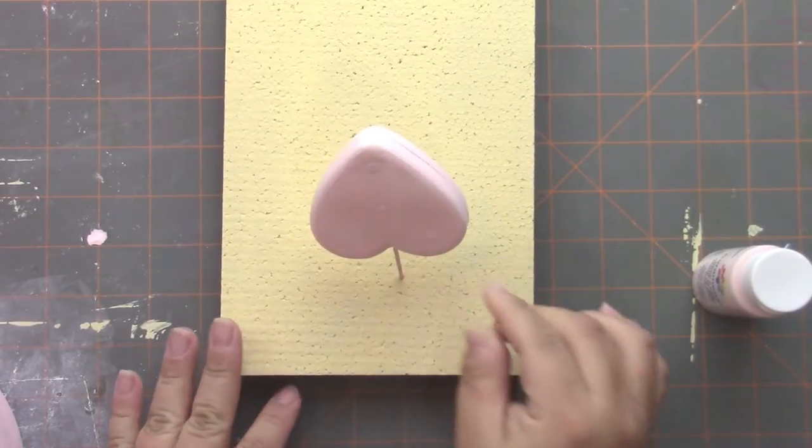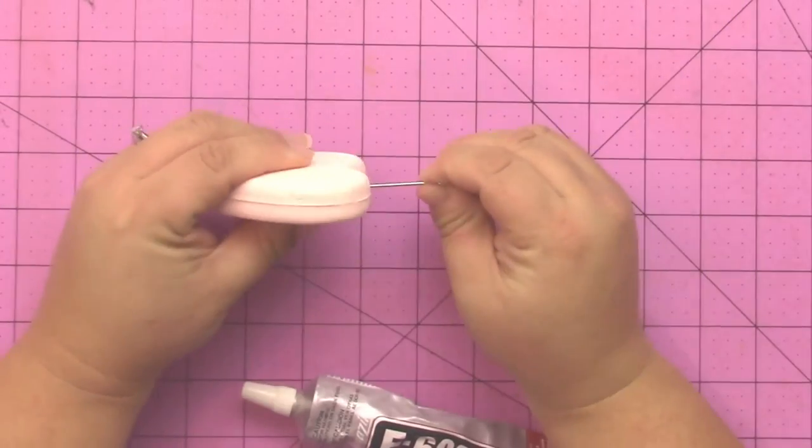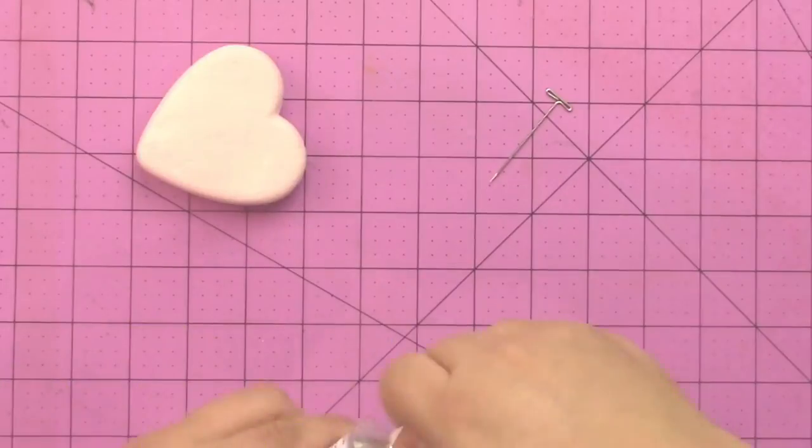Once it's dry, you're going to take a T-pin, and this is just a heavy stick pin, and press it into the heart to make a hole to put your eye pin.